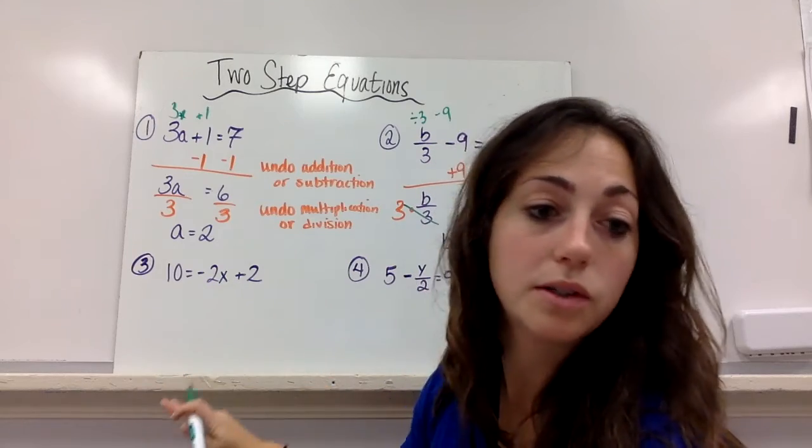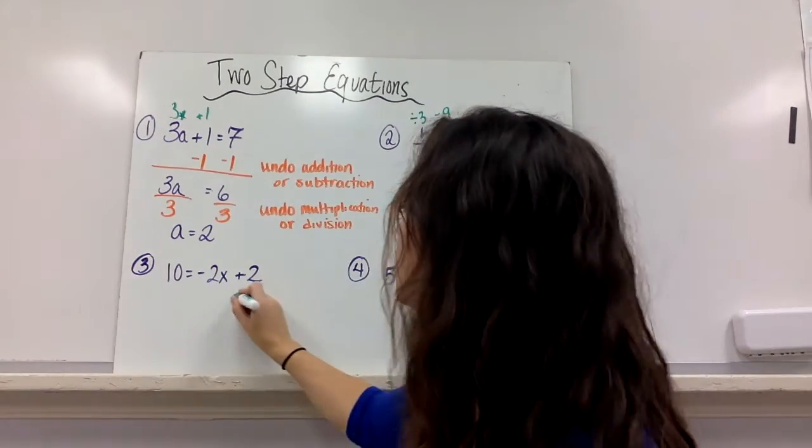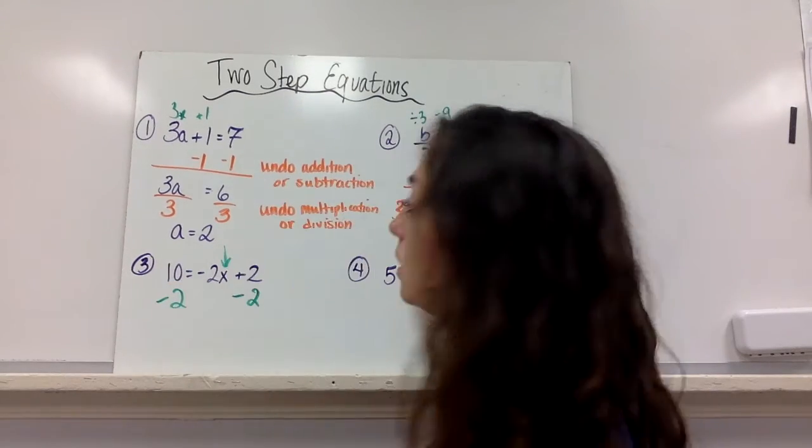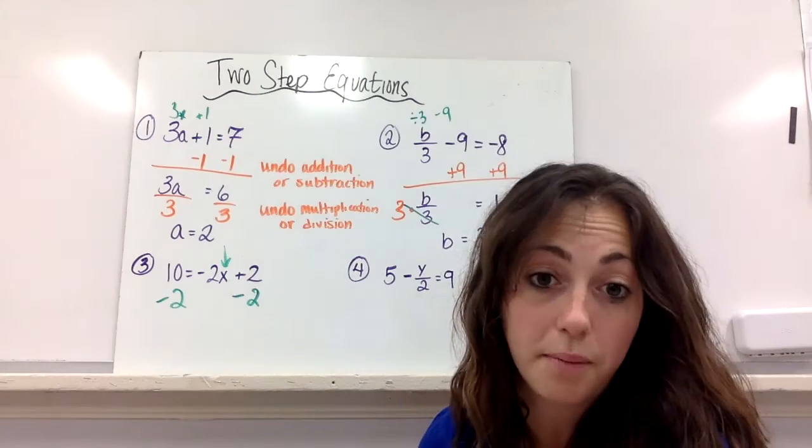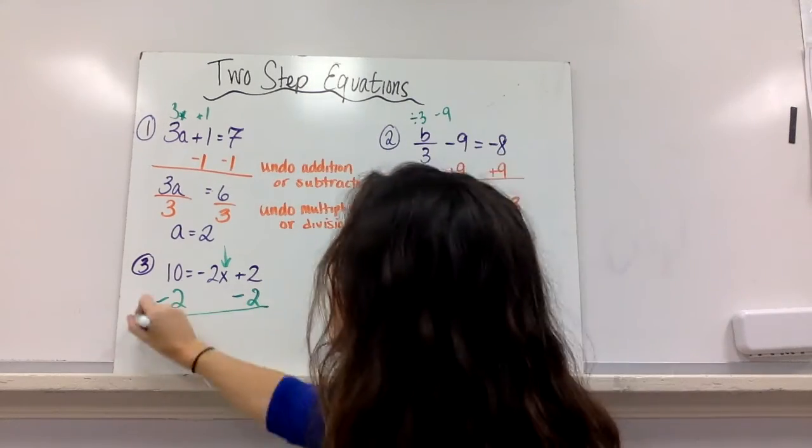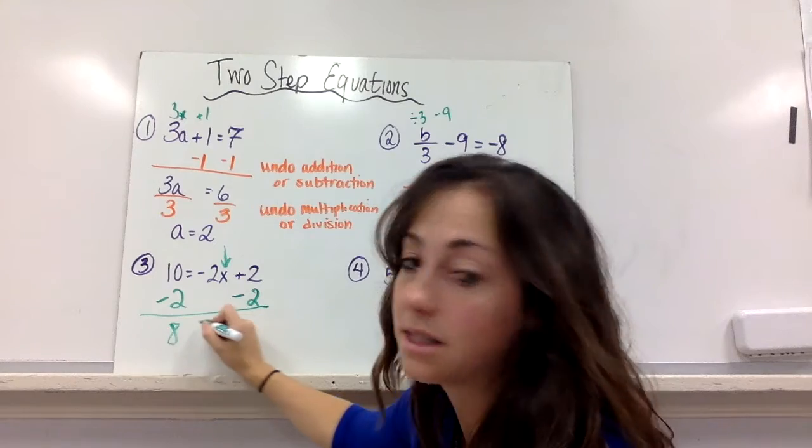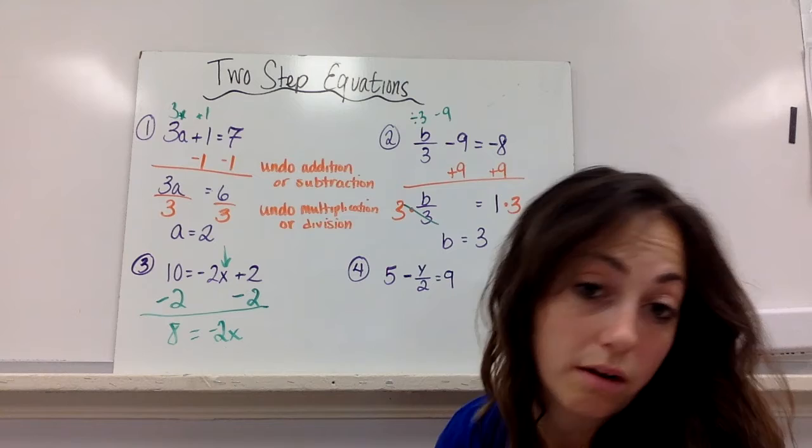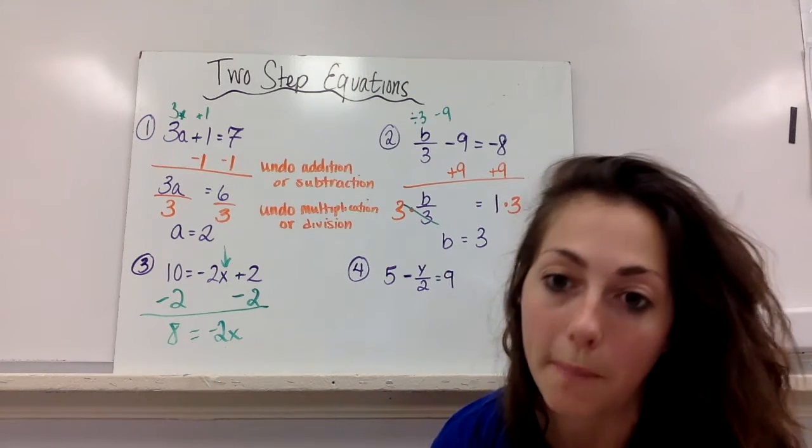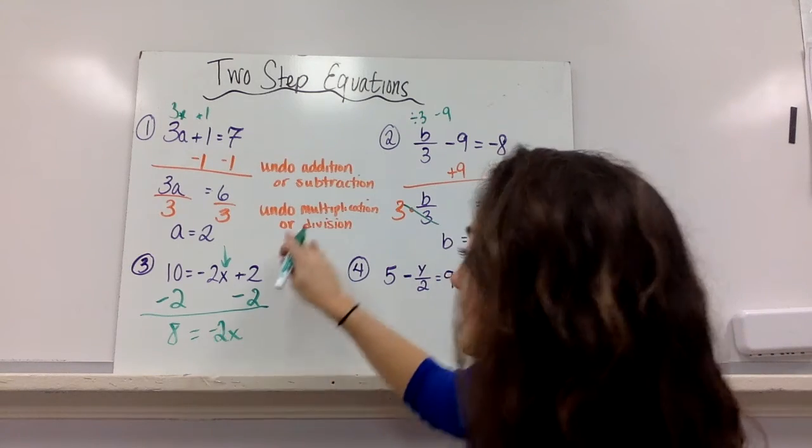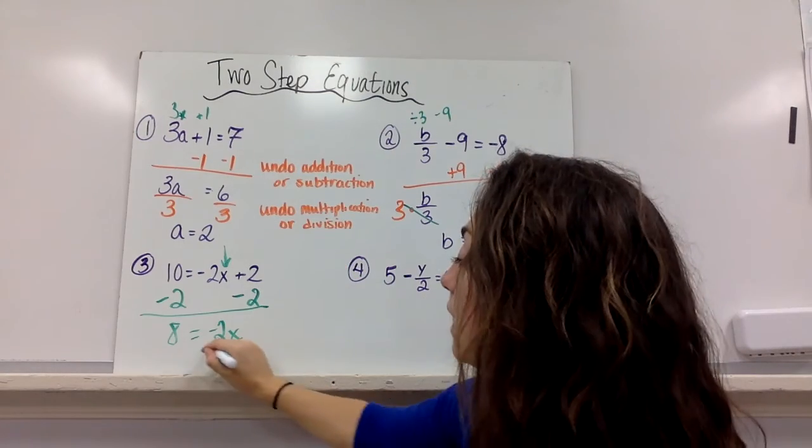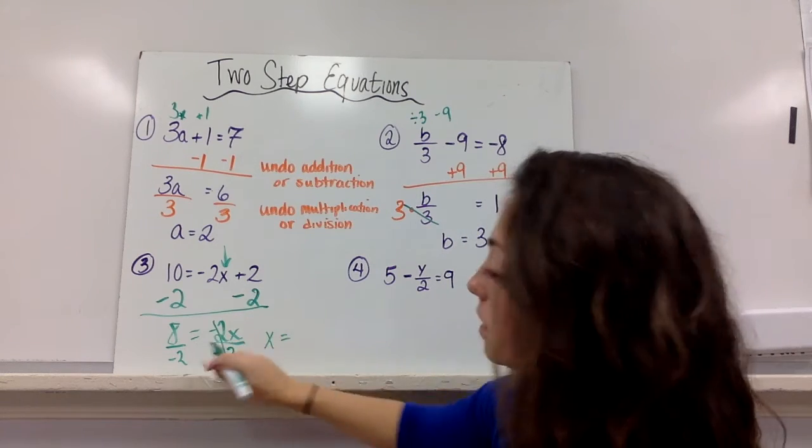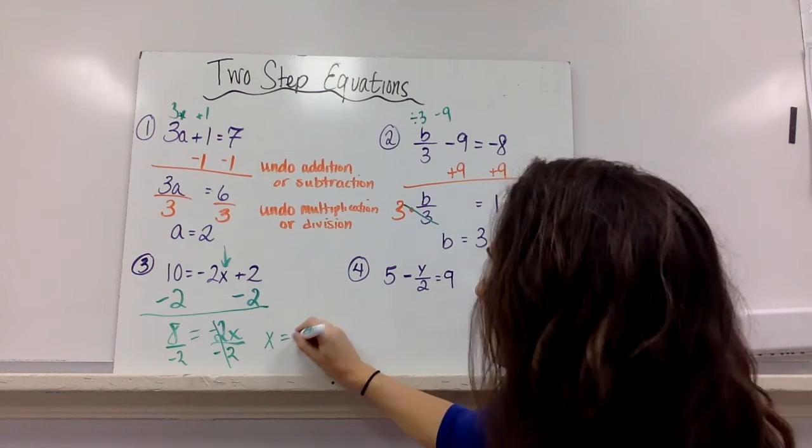So I have a two-stepper, so I'm going to undo addition or subtraction. I subtract 2 because here's my variable—it's on the other side but it's still there. So I subtract 2. 10 minus 2 is 8, then 8 equals negative 2x, because the plus 2 and minus 2 cancel each other out. They're a zero pair. Now I have to do my second step, which is multiplication or division. I'm dividing, and then I get x equals negative 4.